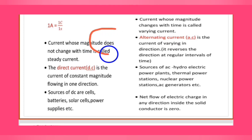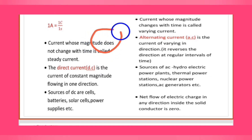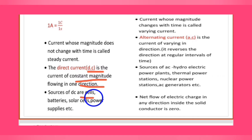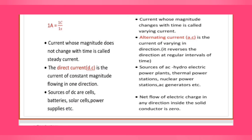Moving further to steady current and varying current: the current whose magnitude does not change with time is called steady current. Direct current (DC) is the current of constant magnitude and it flows in one direction only. Examples of sources of direct current are cells.